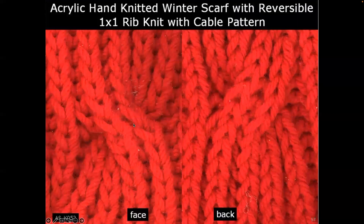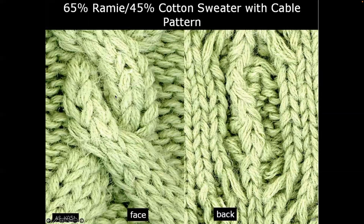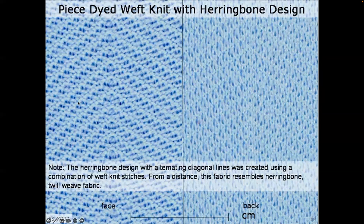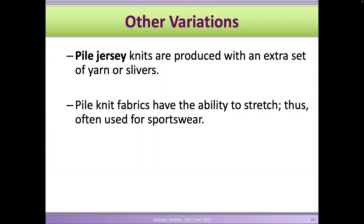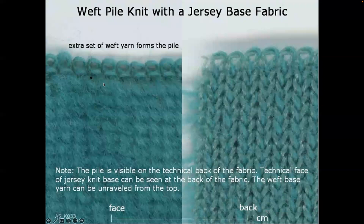This is a cable pattern — face and back. The cable pattern is created using a one by one rib knit — it's a reversible pattern. Here's another cable pattern — face and back. This is a herringbone design, similar to herringbone on woven fabrics, with that diagonal line structure. Pile jersey knits are produced with an extra set of yarns — extra loops or piles on the surface created by extra yarns. This is the face of the fabric and this is the back, which is the technical face of a jersey — the extra set of weft yarns forms the piles on that side.